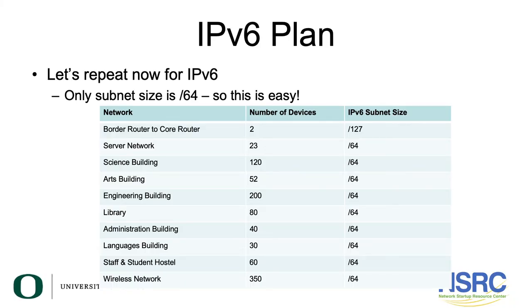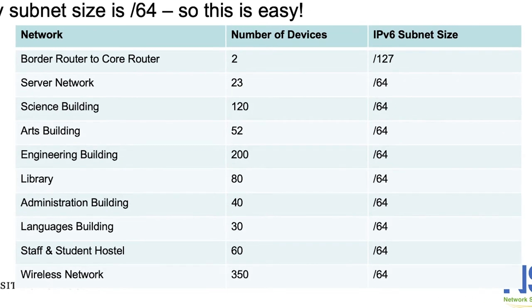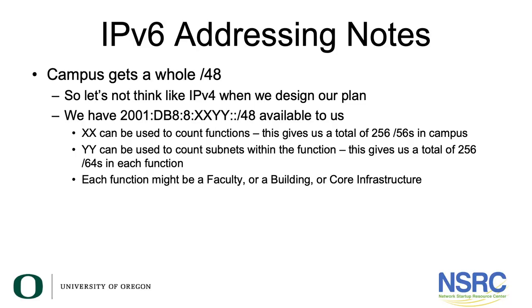For IPv6 we're going to repeat the same thing we did previously for IPv4, but remember that the subnet size is /64 — the smallest prefix for IPv6 is a /64. As you can see on screen, the same table is shown with the number of devices. The border-to-core router has two devices, and you're allowed to use point-to-point links in IPv6. Everything else — from the server network with 23 devices to the wireless network with 350 devices — gets a /64.